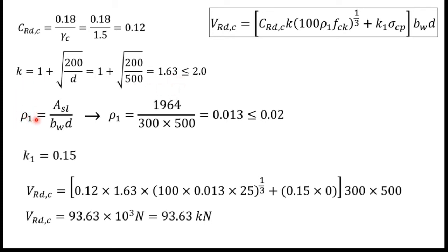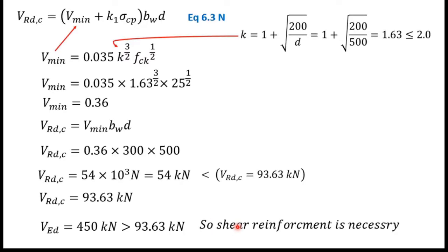For ρ1: substituting As_provided = 1964 mm², bw = 300 mm, d = 500 mm gives ρ1 = 0.013. Since 0.013 is less than 0.02, this is acceptable. k1 equals 0.15 from the code. Substituting all values into the VRdc equation gives VRdc = 93.63 kilonewtons.